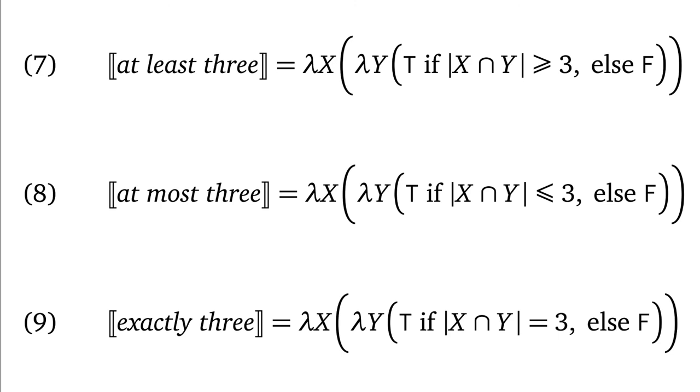At most three is its converse. It tests whether the intersection has at most three entities in it. And if you wanted to, you could use those two together to define a meaning for exactly three, as in nine. That's what Keenan calls a Boolean combination of the two other meanings, since you sort of anded them together. I didn't bother with that, though. I just gave a direct meaning.